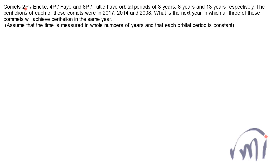To start with, I'll name them as comet 1, comet 2, and comet 3. This one has orbital period as 3 years, this one has orbital time as 8 years, and this one has orbital time as 13 years. Last time when they had perihelion was 2017 for the first one, 2014 for the second one, and 2008 for the third one.